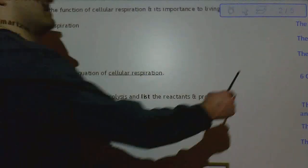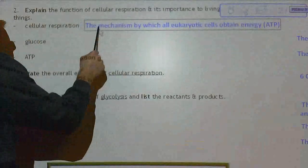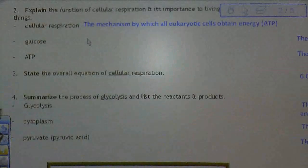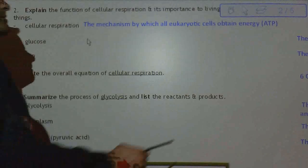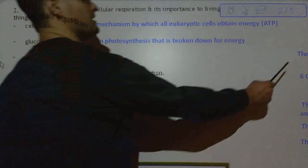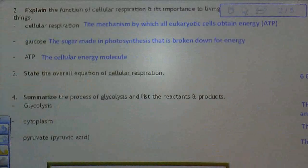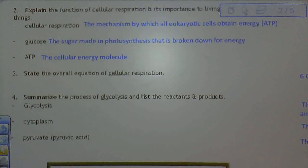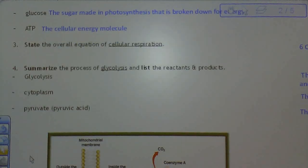The function of cellular respiration and its importance to living things: cellular respiration is important because us and all eukaryotic cells get energy in the form of ATP — the same ATP we talked about in photosynthesis. This is where we get our energy from. Glucose is the sugar made in photosynthesis that is broken down to get energy; it is a very important food source for life on earth. ATP, the cellular energy molecule adenosine triphosphate, is made particularly by ATP synthase.